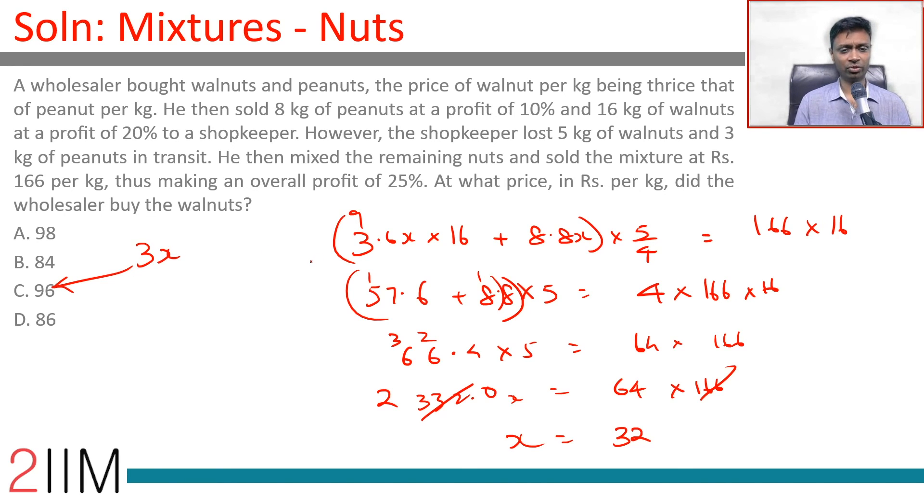Now a tricky question because we are talking about two different things, two different profit percentages, two different quantities, and then something goes wrong and then there's the remaining. He sells at a price to get a profit. Conceptually nothing here, but layer after layer after layer